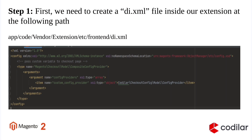Step 1: First we need to create a di.xml file inside our extension at the following path: app/code/vendor/extension/etc/frontend/di.xml. Here it references CompositeConfigProvider which is under Magento/Checkout/Model/CompositeConfigProvider. It takes a single argument that is configProviders, which is of type array, and we will be defining our custom object under it — that is CustomConfigProvider, which will be declared under the path Codilla/CheckoutConfig/Model/ConfigProvider.